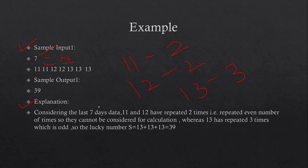Consider the last seven days data: 11 and 12 have repeated two times, which is an even number, so they cannot be considered for the calculation. Whereas 13 has repeated three times, which is odd. So the lucky number is 13 + 13 + 13 = 39. If 13 occurs five times then you would add 13 five times.